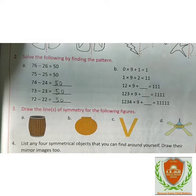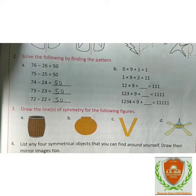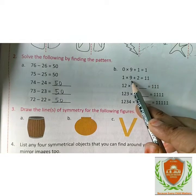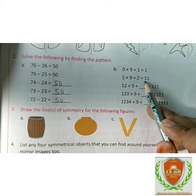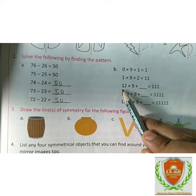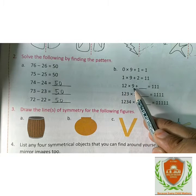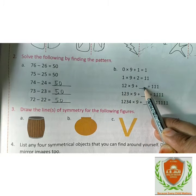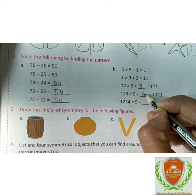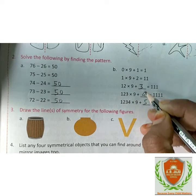Next pattern: 0 times 9 plus 1 equals 1, then 1 times 9 plus 2 equals 11, then 12 times 9 plus 3...